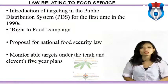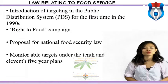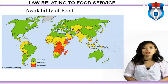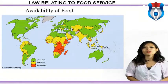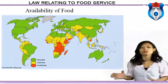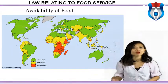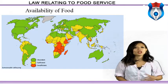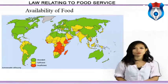These targets are similar to the Millennium Development Goals (MDGs) on poverty and women and child nutrition. Food security at the national level refers mainly to availability in the country of sufficient stocks of food to meet domestic demand, either through domestic supply or through imports.